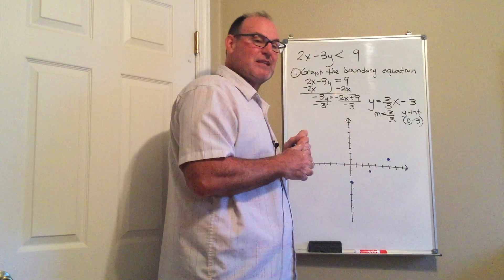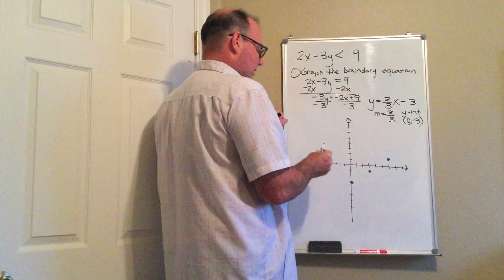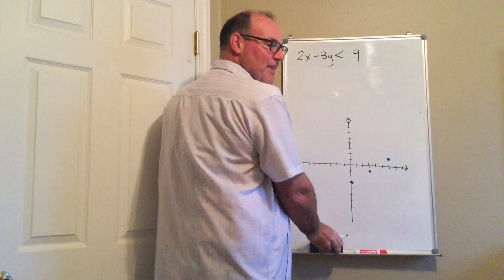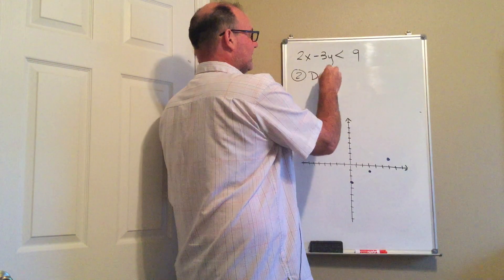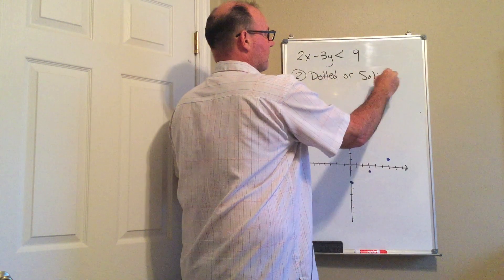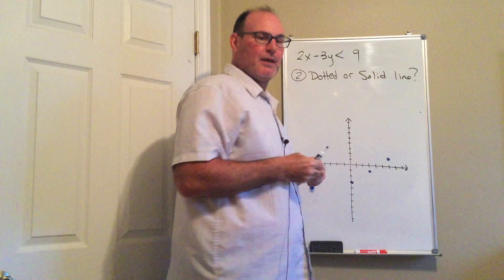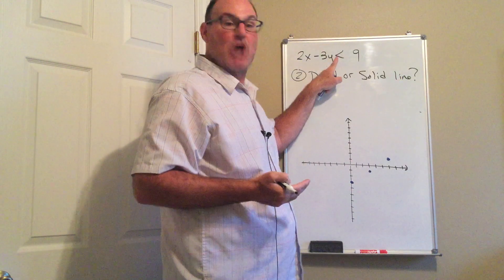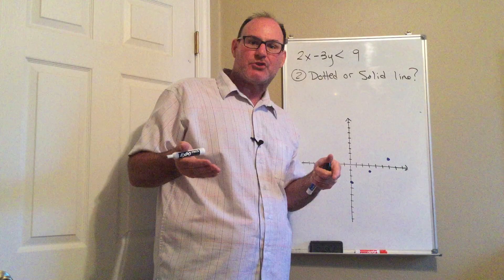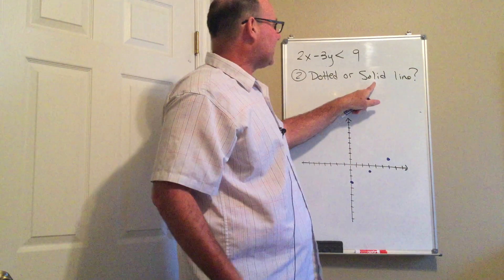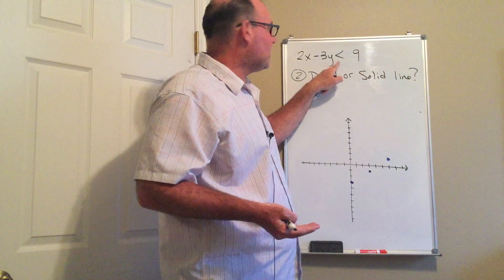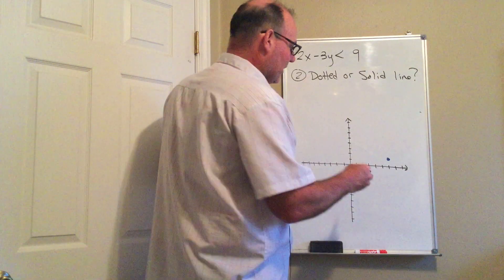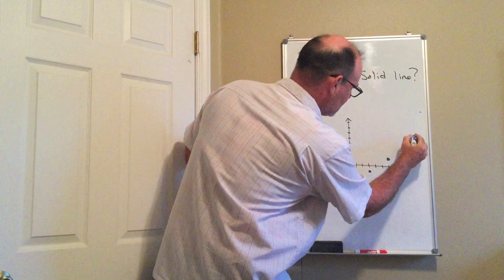Don't connect the dots just yet. When you graph an inequality, step 2 is you have a choice: are you going to connect the dots with a dotted or solid line? A dotted line is what you use when the boundary is not part of the solution — in other words, when you don't have an equals. It's the same thing as an open circle when graphing on the number line. A solid line is when the boundary is also part of the solution — when you have equals, which I do not have in this problem. It's the same thing as a filled-in circle. So since I do not have equals, I'm going to use a dotted line.